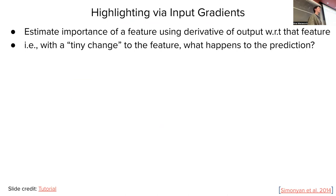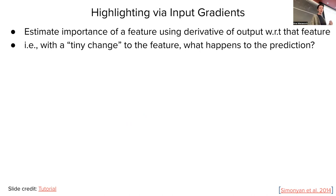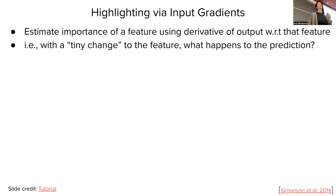One of the most prominent techniques for computing highlights uses gradients with respect to the input. We estimate the importance of a feature using the derivative of the output with respect to that feature. The derivative, by definition, tells us how much the function will change if we change the input variables slightly. So here we have our output function, and by taking the derivative with respect to the input, we measure how much slight changes of input variables affect the output.